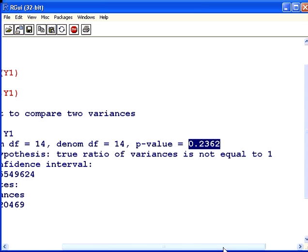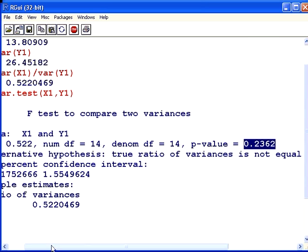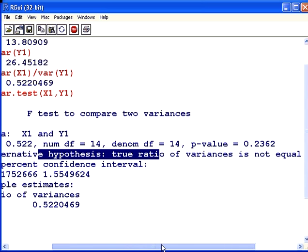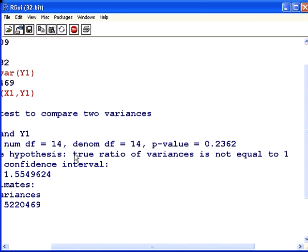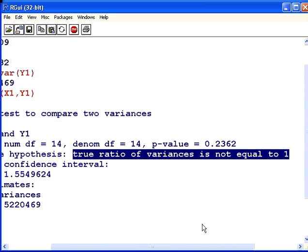Just to be clear, the alternative hypothesis, I'm looking at this line here, the true ratio of variances is not equal to 1. We fail to reject that hypothesis.